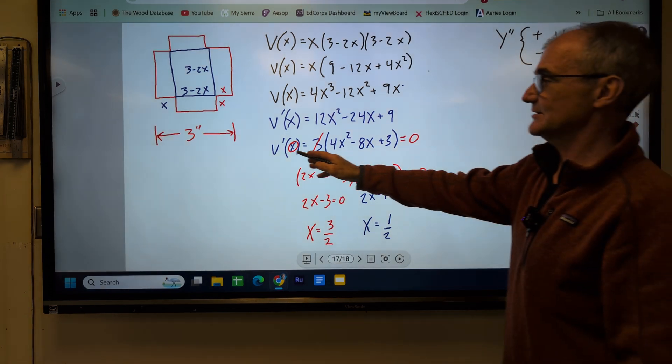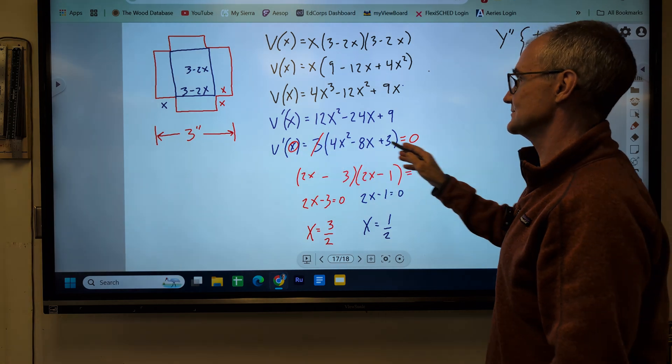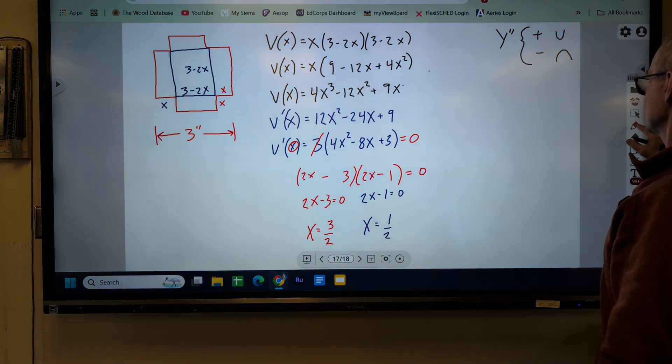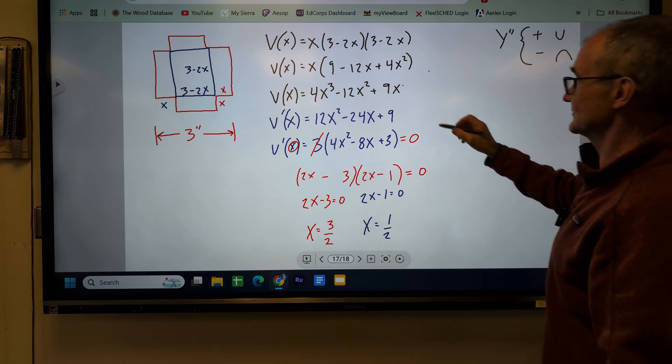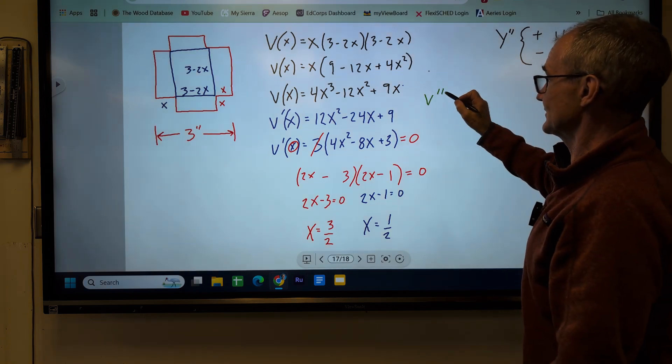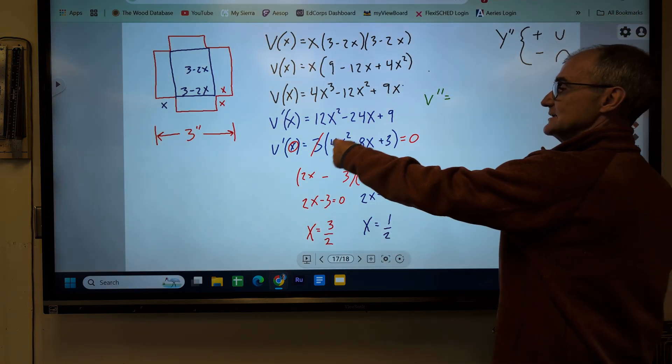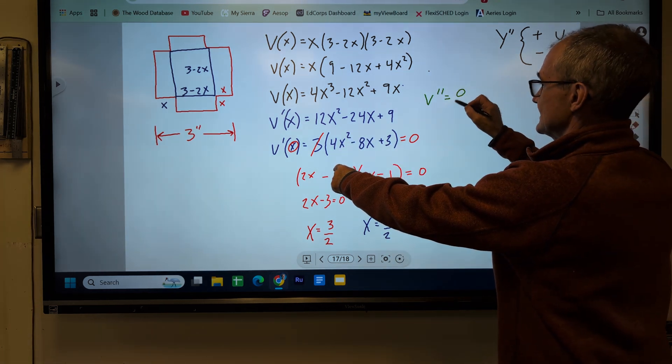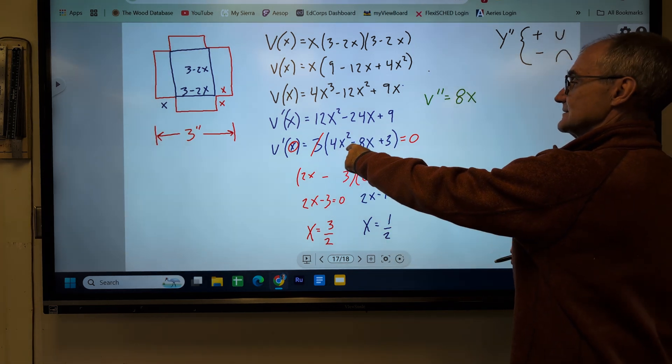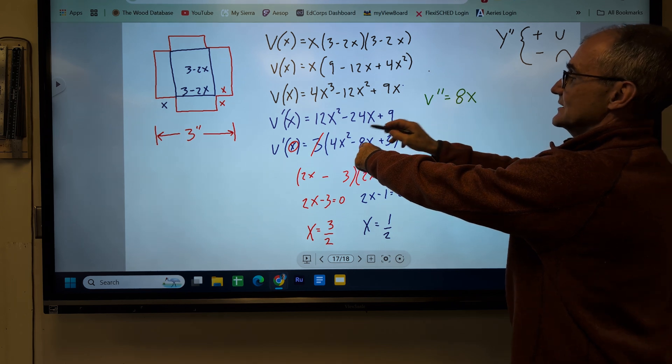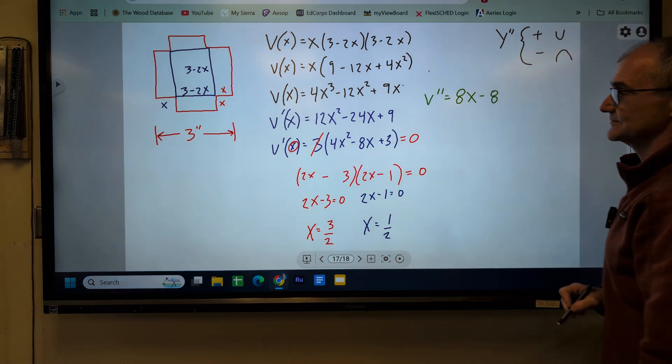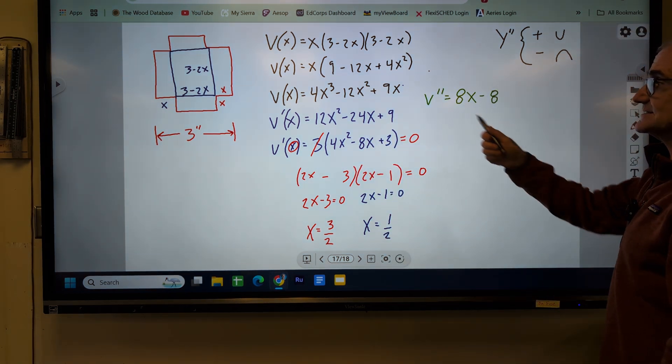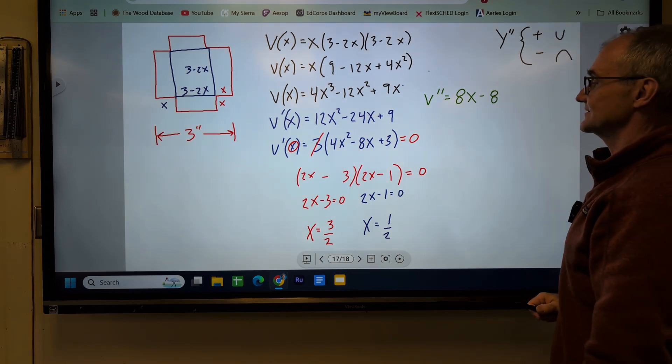So here's my derivative, Y prime equals that. Let me go to green for my double prime. So V double prime is going to be the derivative of this derivative. 2 comes down in front to give me 8X to the first minus, 1 comes down in front, minus 8. So there's my second derivative. That's not too hard to find.